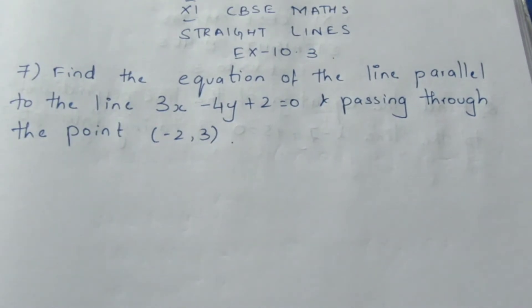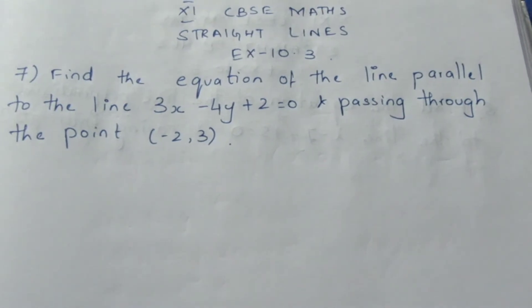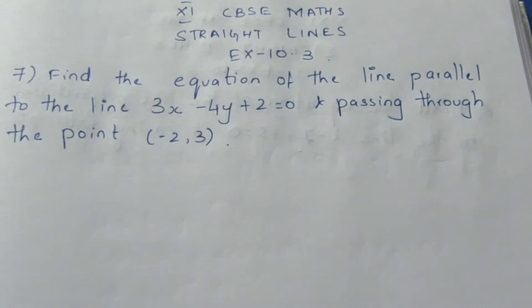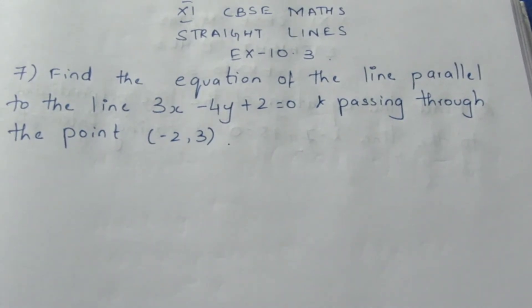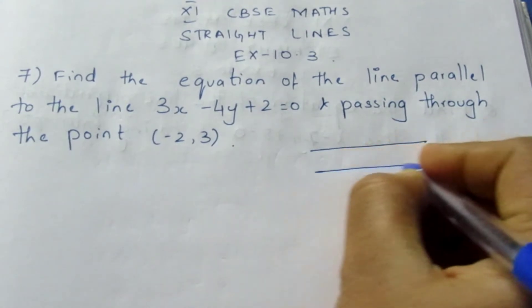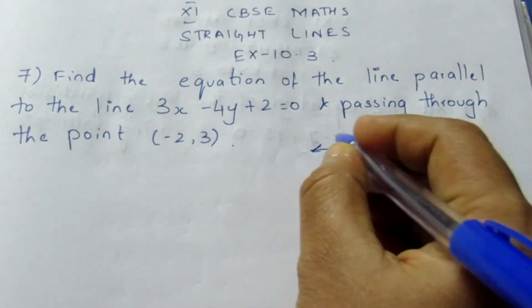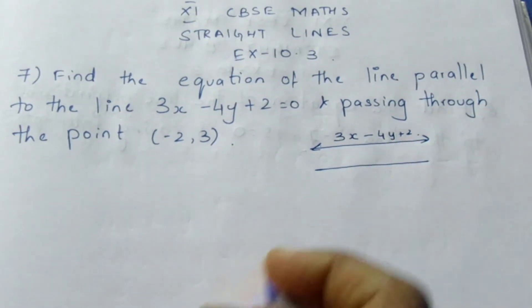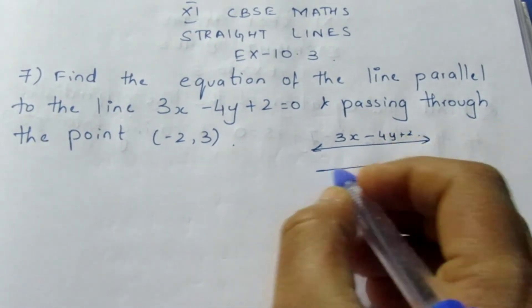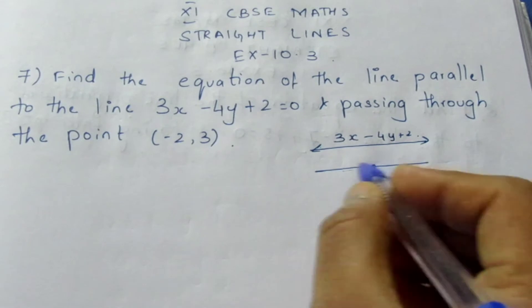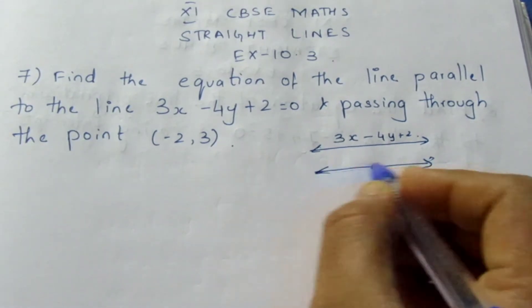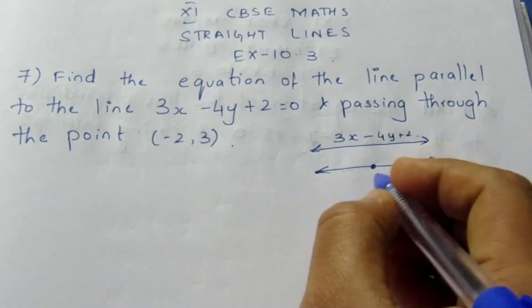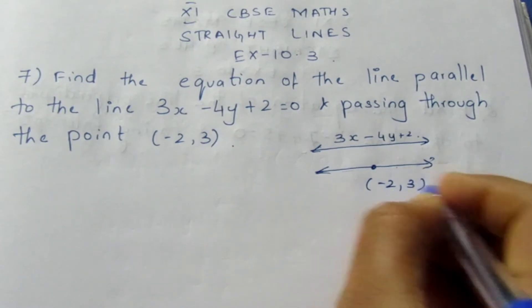Find the equation of a line parallel to the line 3x minus 4y plus 2 equals 0 and passing through the point (-2, 3). So we need to find the equation of a line parallel to the given line and passing through the point (-2, 3).